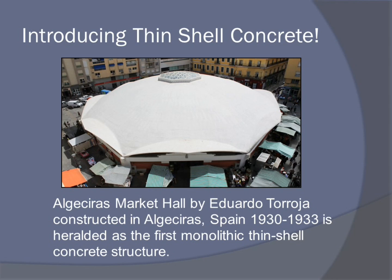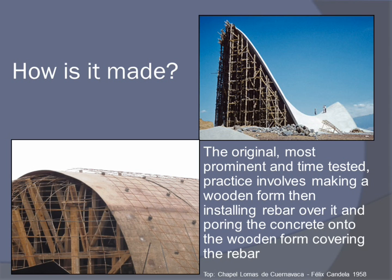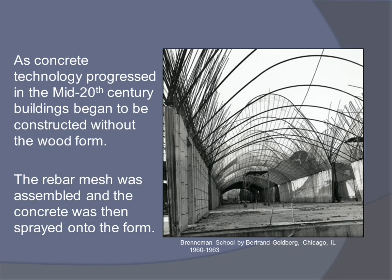They're also able to span a large space in an artistically pleasing manner. The original, most predominant and time-tested practice involves making a wooden frame, installing rebar over it, and finally pouring concrete onto the rebar. This was very effective but not an economical method, so while labor and materials were inexpensive, it was a popular type of construction. In the mid-20th century, advances in concrete technology happened, especially with shotcrete and sprayed concrete. They started creating buildings without the wood form, but still had to pay skilled craftsmen to create the rebar and mesh forms.